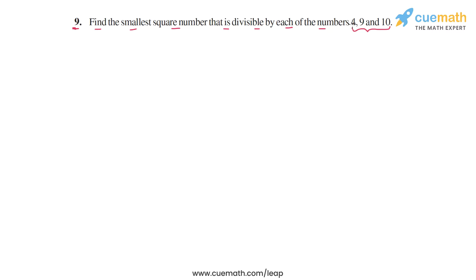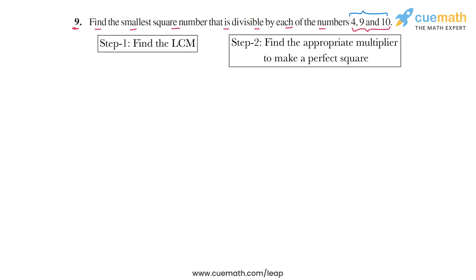Here's how we will solve this problem. We will do it in two steps. In the first step, we will find the LCM of these three numbers: 4, 9, and 10. Then in the second step, we will find a multiplier by which to multiply that LCM to make it into a perfect square.